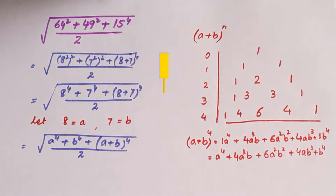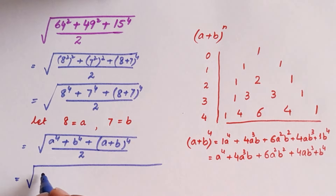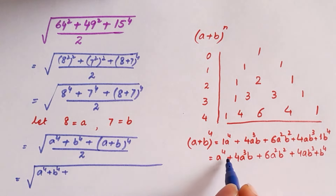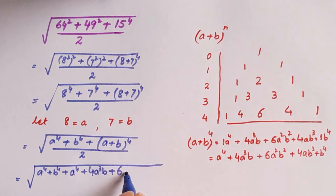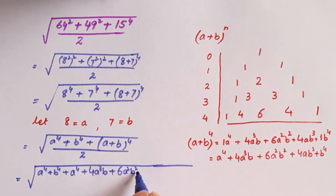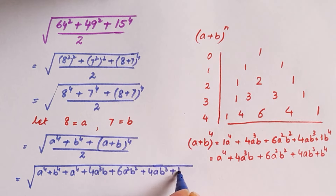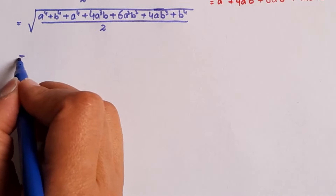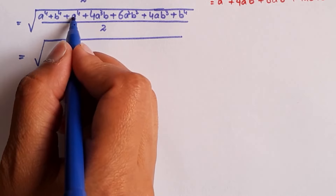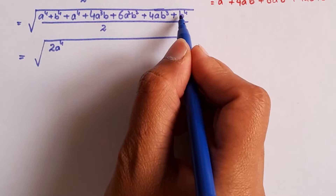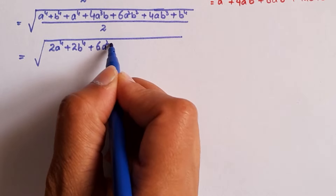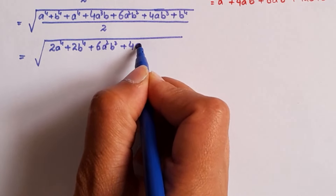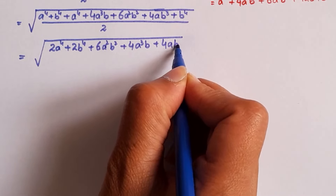If you want me to make a separate detailed video on the binomial theorem, do write in the comment box — I will definitely make it for you. For now, our expression is the square root of a⁴ + b⁴ + (a⁴ + 4a³b + 6a²b² + 4ab³ + b⁴) divided by 2. Adding the like terms: a⁴ + a⁴ = 2a⁴, and b⁴ + b⁴ = 2b⁴. So we have the square root of 2a⁴ + 2b⁴ + 6a²b² + 4a³b + 4ab³, divided by 2.